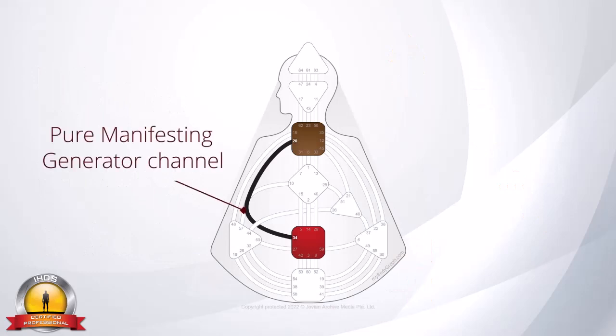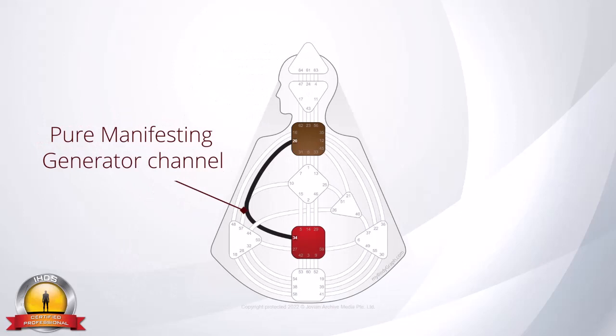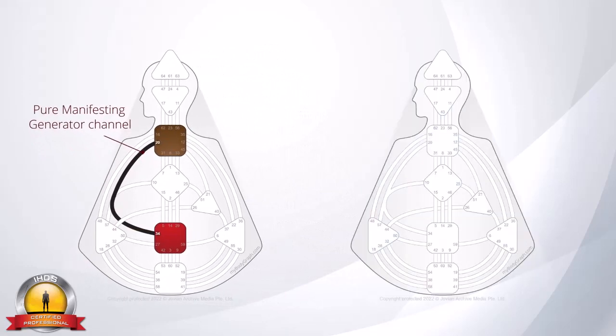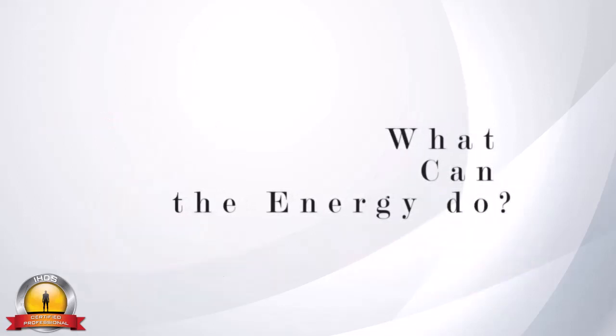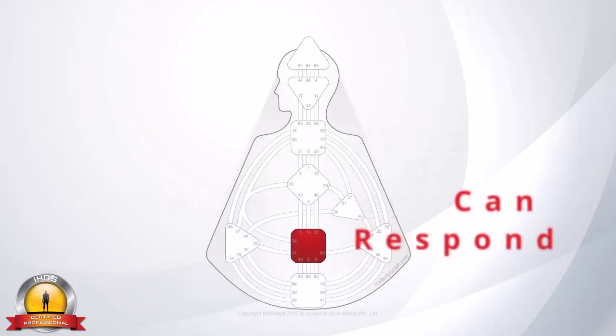when you look at the body graph, this pure manifesting generator channel that you see here, this is the only design that is, to be technically correct, a pure manifesting generator, considered to be a manifesting generator by design. And then, that confuses people because if you look at the body graph and you see all of those different activations from sacral to the communication and action function, our throat center, however it is that that energy reaches to the throat, as long as that sacral center is defined, we have what people call a manifesting generator.